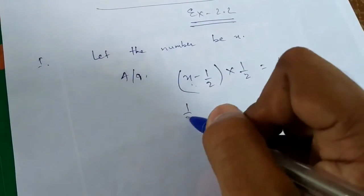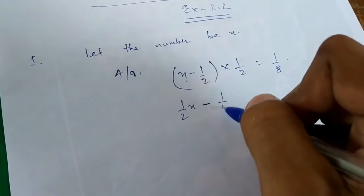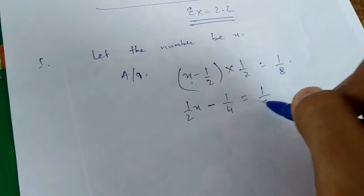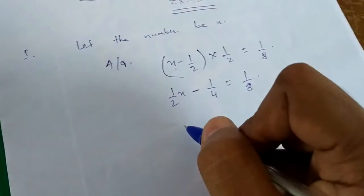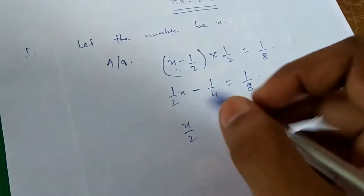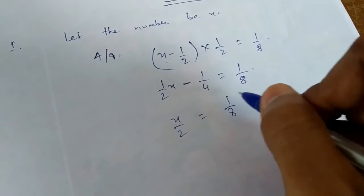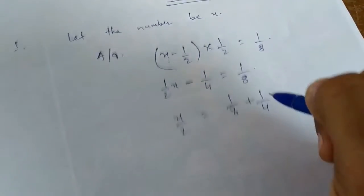1 by 2 into x gives 1 by 2 x, minus 1 by 2 into 1 by 2 is 1 by 4, equals to 1 by 8. x by 2 minus 1 by 4 equals 1 by 8.